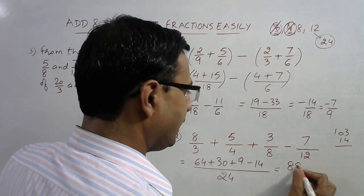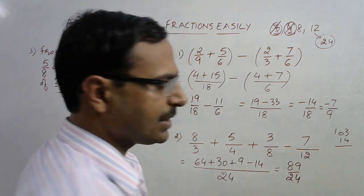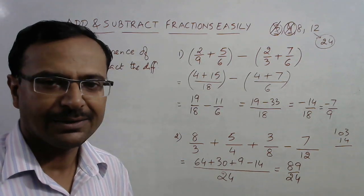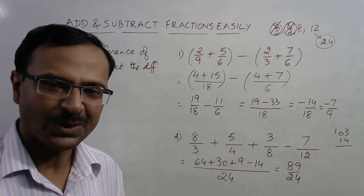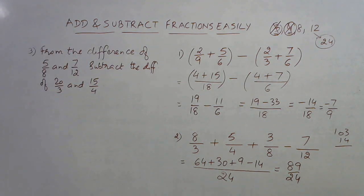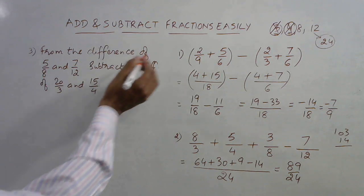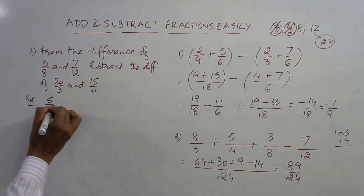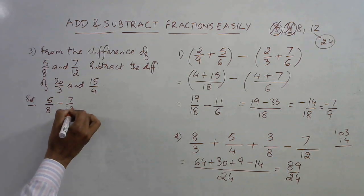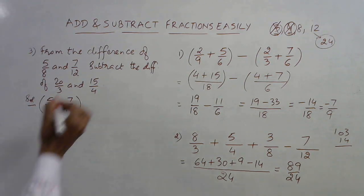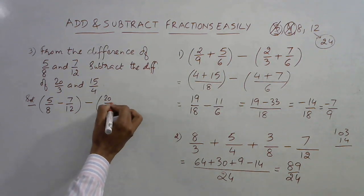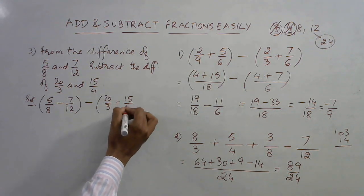So the answer to that question is 89/24, which should take less than about 10 seconds to compute. Now the final question is in statement form: from the difference of 5/8 and 7/12, subtract the difference of 20/3 and 15/4. So we need to compute (5/8 − 7/12) − (20/3 − 15/4).